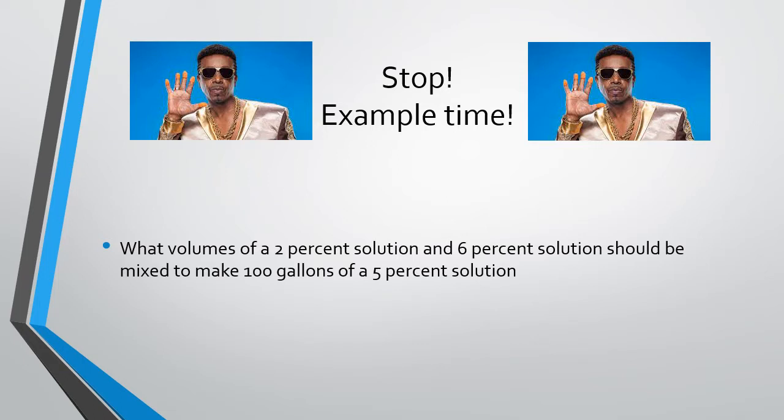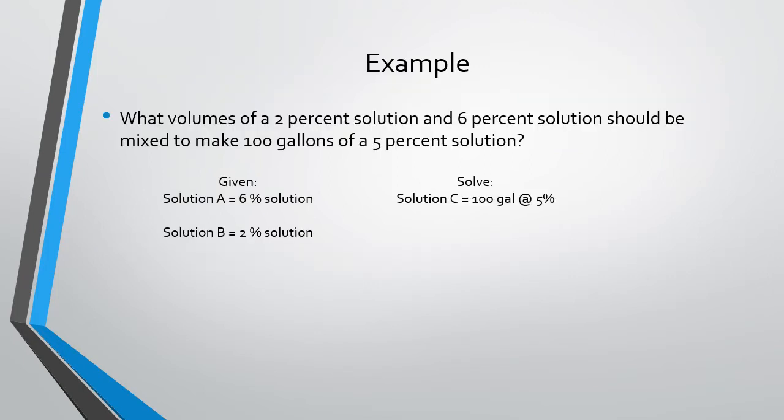Time for an example. What volume of 2% solution and 6% solution should be mixed to make 100 gallons of 5% solution? So what are we given? Solution A is equal to 6%, solution B is equal to 2%, and what are we trying to solve for? Solution C, which is equal to 100 gallons at 5%.